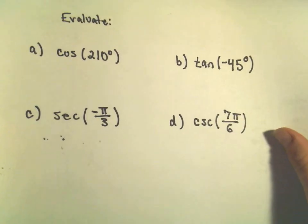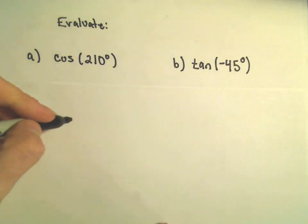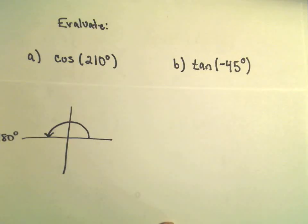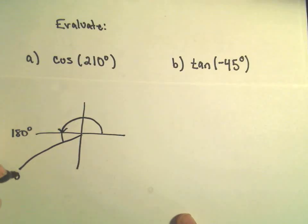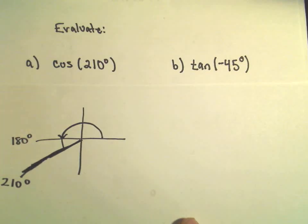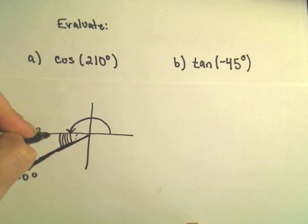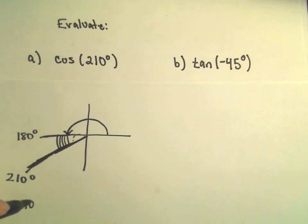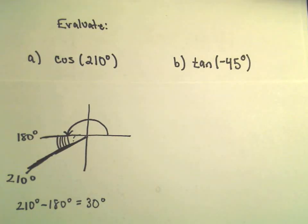Let's evaluate cosine of 210 degrees. The first thing I'm going to do is find the reference angle. 210 degrees — halfway around is 180 degrees, and going a little bit further puts us at 210 degrees. The reference angle is just the angle between the x-axis and the terminal ray. The difference between 210 and 180 degrees is simply 30 degrees, so the reference angle is 30 degrees.